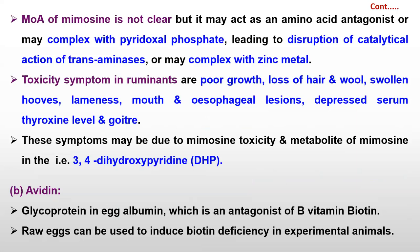By that way, mimosine works negatively in the system. The toxic symptoms in ruminants are poor growth, loss of hair, loss of wool, softened hooves, lameness, mouth and esophageal lesions, depressed serum thyroxine level, and finally animal death. The metabolite of mimosine is known as 3,4-dihydroxypyridine, or DHP.